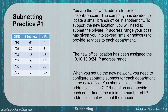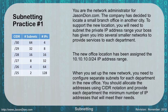For the first problem, you're a network administrator and the company has decided to locate a small branch office in another city. To support the new location you need to subnet the private IP address range your boss gave you into several smaller networks to provide services to each department. The new office location has been assigned a 10.10.10.0/24 IP address range which gives you 256 IPs. You need to configure separate subnets for each department, allocating addresses using CIDR notation and providing each department the minimum number of IP addresses that will meet your needs.